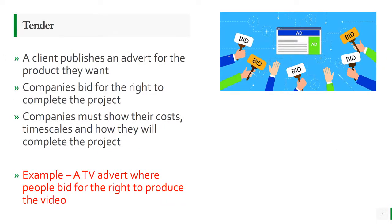A tender type of client brief is quite interesting because the client actually publishes an advert for the product they want. For example, you might have a new product you want advertising and you publish an advert saying 'we want an advert creating for our product — someone needs to bid.' If you successfully win the bid, you get the money. A number of advertising companies can bid for the right to complete that project, presenting their ideas, and the client decides which one to go with. They are then employed to produce the advert and come up with a brief.